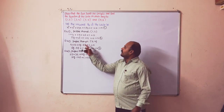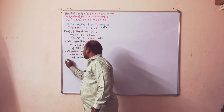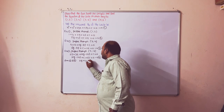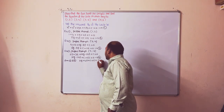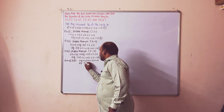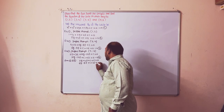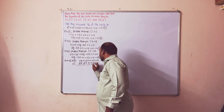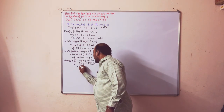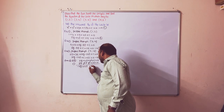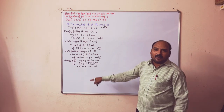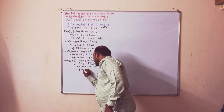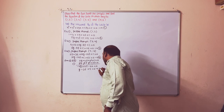Eliminating the constant c from Equations 2 and 3 by subtracting: (2g + 4f + c + 5) minus (6g - 8f + c + 25) = 0. The c terms cancel, giving -4g + 12f - 20 = 0. Dividing by -4: g - 3f + 5 = 0. This is Equation 5.